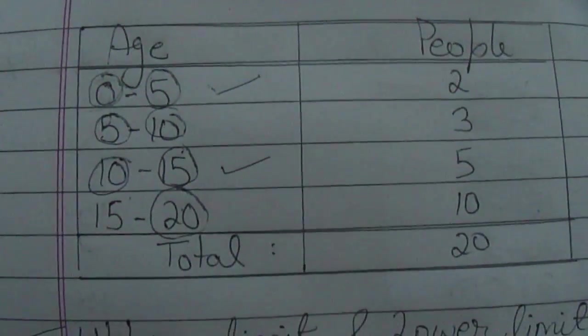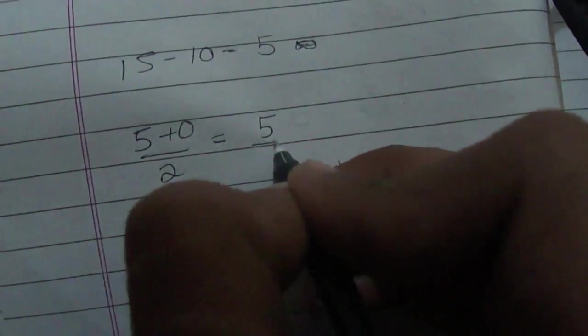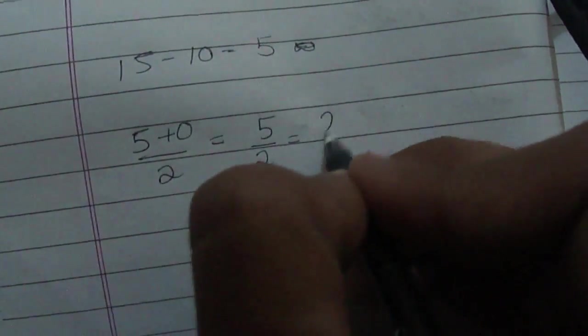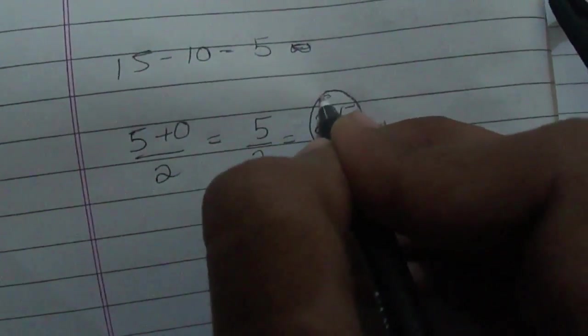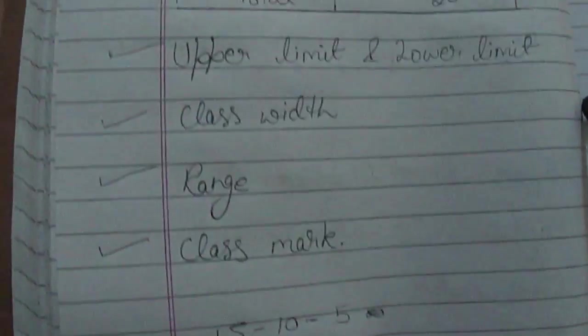To find the class mark of class 0 to 5, we add 5 plus 0 divided by 2, which equals 5 by 2, that is 2.5. Hence, 2.5 is the class mark of the class 0 to 5. Thank you, see you next class.